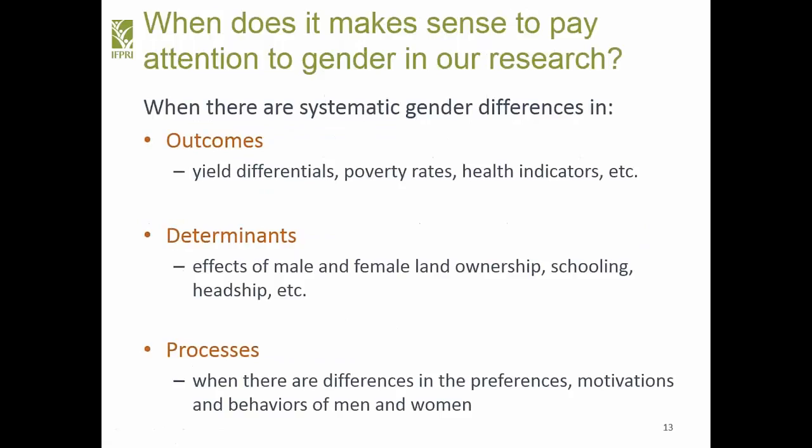When does it make sense to pay attention to gender in our research? When there are systematic gender differences in outcomes — wage differentials, poverty rates, health indicators, nutrition outcomes. Also when there are systematic gender differences in determinants such as land ownership, schooling, headship. As well as processes: differences in preferences, motivations for behavior, legal processes, institutional processes. There could be gender differences in all of those things, and in those cases it makes sense to pay attention to gender in our research.